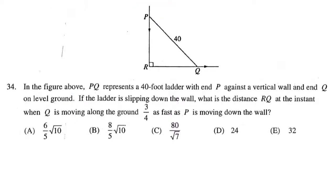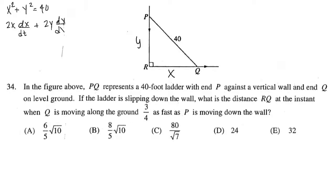This problem is a little different from your traditional related rates problem, but it is still set up very similarly. I would label this side as Y and this side as X. We still go through the same process — we set up our geometric formula. So we're going to have X² + Y² = 40², and differentiating gives us 2X(dx/dt) + 2Y(dy/dt) = 0, which simplifies to X(dx/dt) + Y(dy/dt) = 0.